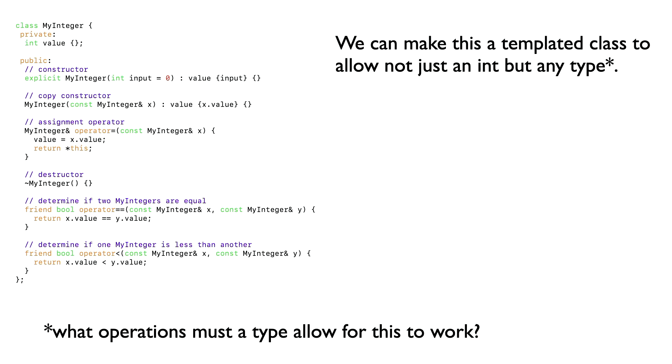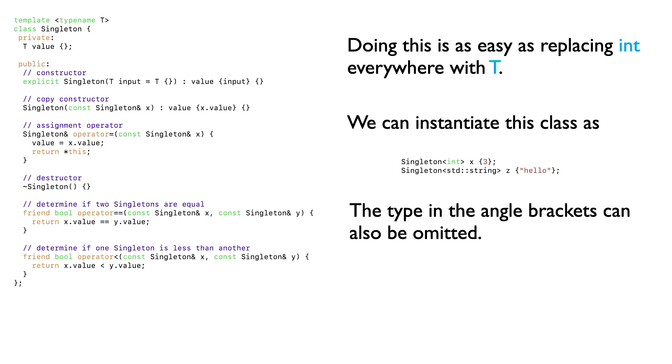OK, so here's our my integer class that we did in tutorial. So this just had a single integer as a member value. And then we basically tried to simulate the different things that you can do to an integer. So we had a copy constructor, assignment operators, testing if two my integers are equal and testing if one my integer is less than another. And now we want to make this class be able to contain not just an integer, but an arbitrary type using templates.